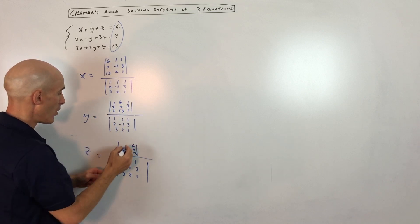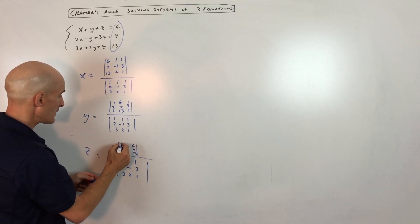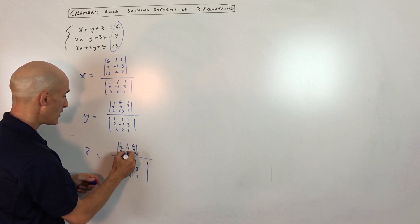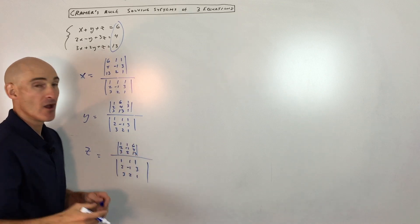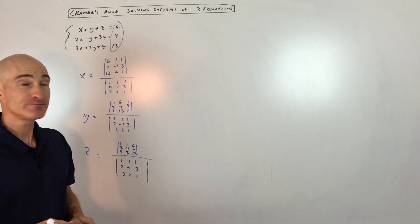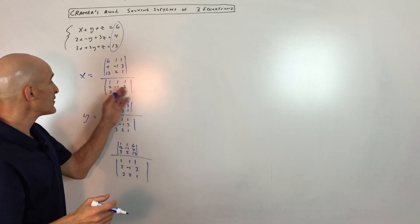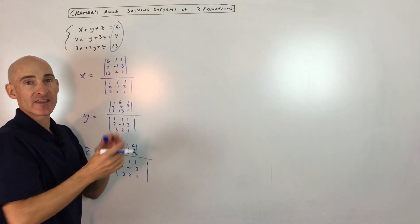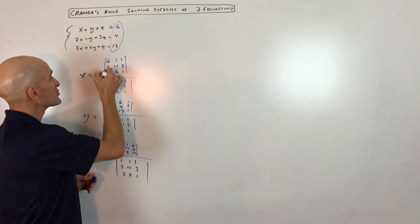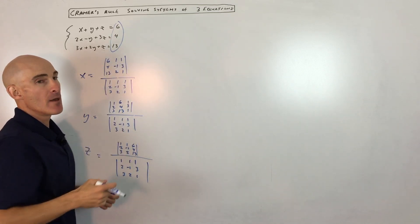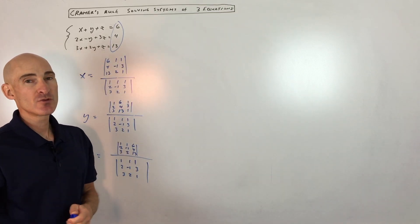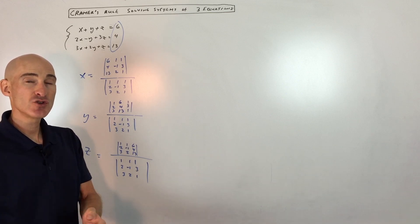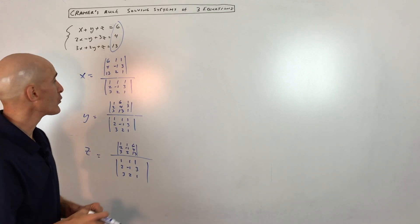With y, I replace the y coefficients with the solutions — 6, 4, and 13. With z, I replace the z coefficients with the solutions, and put the other coefficients back in: 1, 3, 1 and 1, 2, 3 and 1, negative 1, 2. When you see bars like that, that means take the determinant. Usually a matrix has a bracket, but these bars mean determinant.